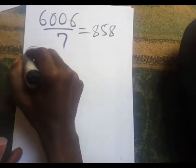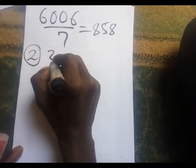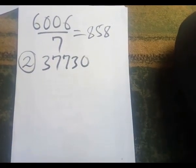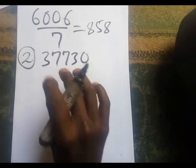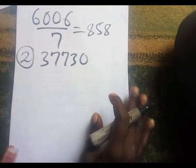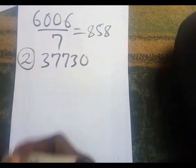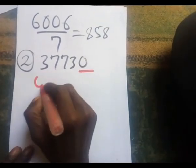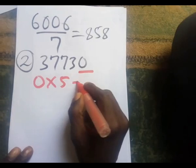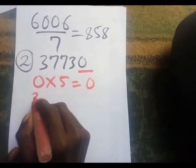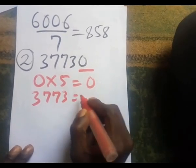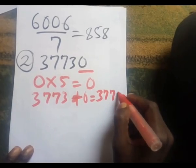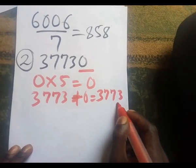Now let's look at the second example: 37,730. Can this be divisible by seven? The last digit is zero, so zero multiplied by five is zero. Adding zero to 3773 gives 3773, so we effectively have 3773. The last digit now is three.